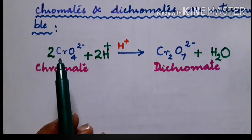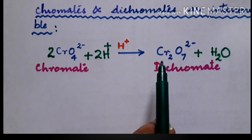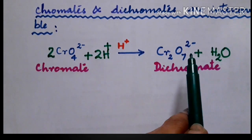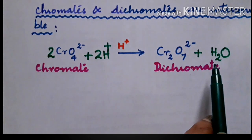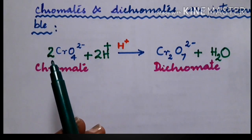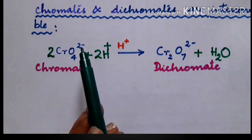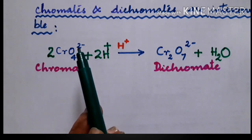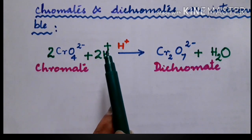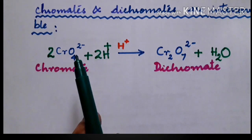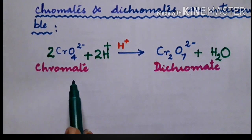Check the balanced equation: two chromium on each side, oxygen totals eight on each side, hydrogens are two on each side. The left side has two into two giving four negative charges, plus two charges total two minus; this side is also two minus. So this is the balanced equation.